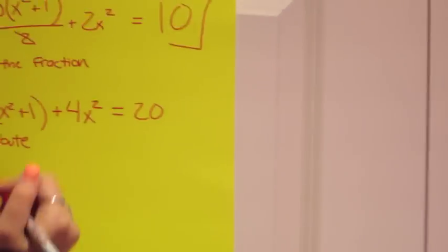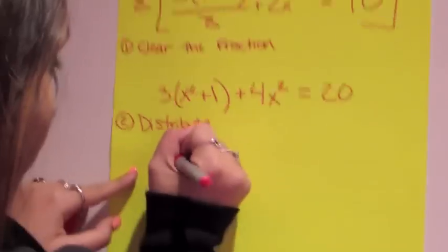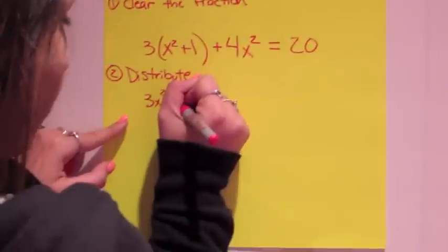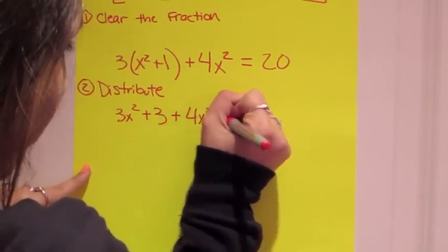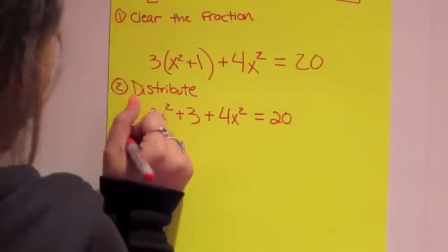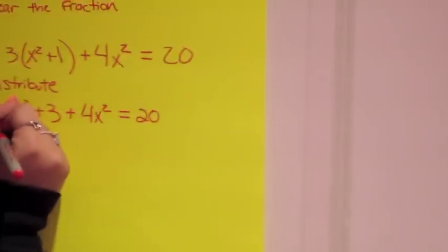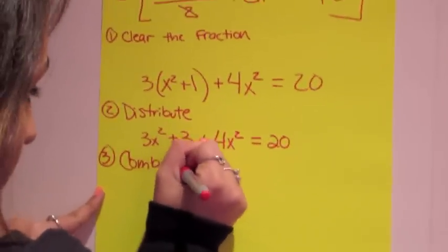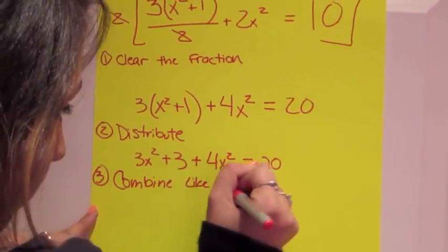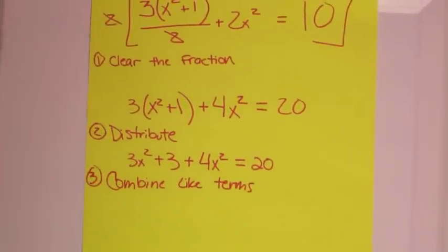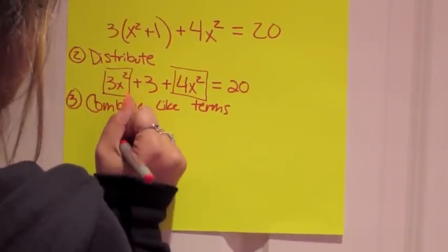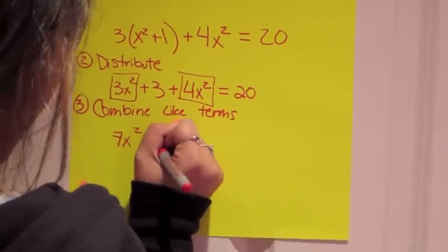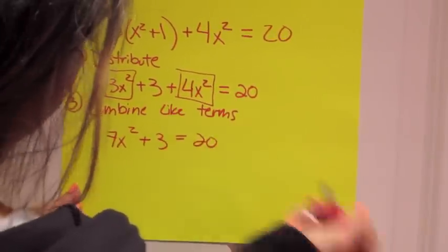You do 3 times x squared which is 3x squared, 3 times 1 which is plus 3, and then plus 4x squared equals 20. The third step, combine the like terms. You add this and this because they're the same like term, which is 7x squared plus 3 equals 20. The fourth step, additive inverse.